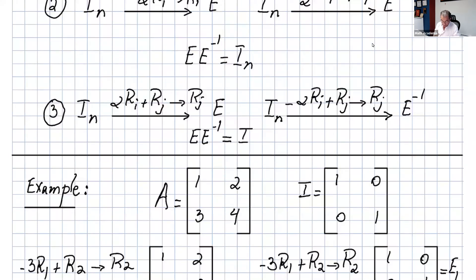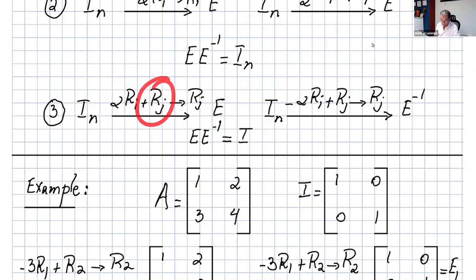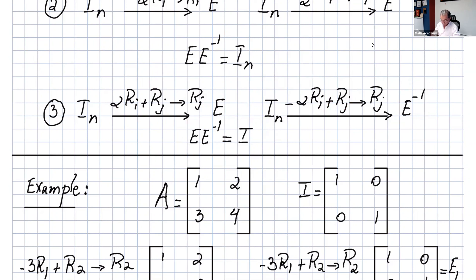For row operation three — performing α·R_i + R_j = R_j — to find the inverse you apply -α·R_i + R_j to I_n and that gives E inverse. Again, multiplying E times E inverse confirms you get the identity matrix.